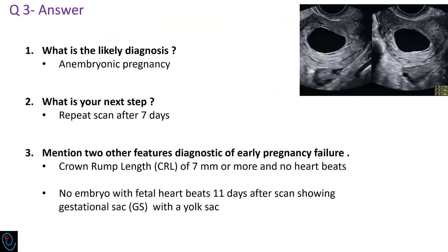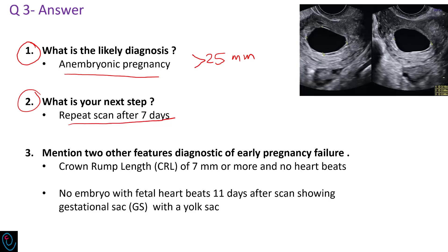Answer to the third question: the likely diagnosis is anembryonic pregnancy, because the mean sac diameter is more than 25 mm with no yolk sac or fetal pole. The next step, according to NICE guideline, is to repeat the scan after 7 days. Two other feature diagnostics of early pregnancy failure include a crown-rump length of 7 mm or more with no fetal heartbeats, or no embryo with fetal heartbeats 11 days after a scan showing a gestational sac with a yolk sac.